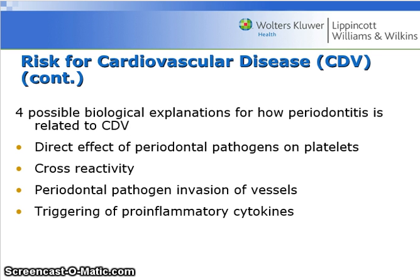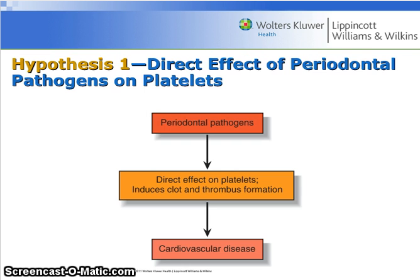There are four possible biological explanations for how periodontitis is related to CVD. Hypothesis 1 states that there is a direct effect of periodontal pathogens on platelets, which induces clot and thrombus formation and therefore increases the risk of cardiovascular disease.